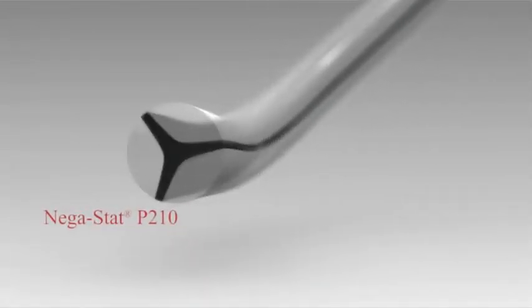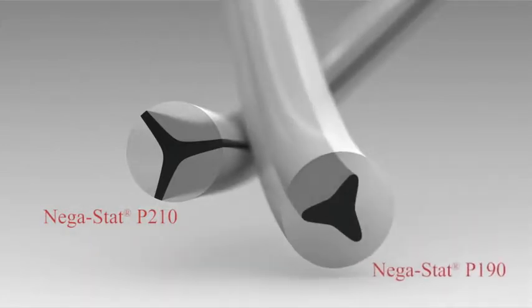Negastat P210 is a surface conductor with a unique trilobal carbon core with three surface conducting points. Negastat P190 is a core conductor with a unique trilobal carbon core surrounded by a polyester sheath.